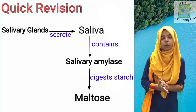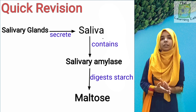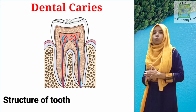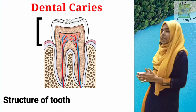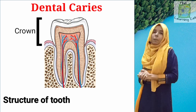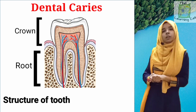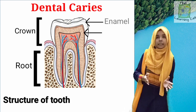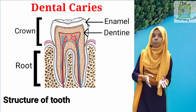One important concept to understand before we move forward is dental caries. But first, we need to know about the structure of a tooth. We can divide the tooth into two main parts: the part visible in the oral cavity, known as the crown, and the part embedded in the jaws, known as the root. The tooth is a hard structure formed by enamel and dentine, and beneath that hard structure is a soft portion known as the pulp.